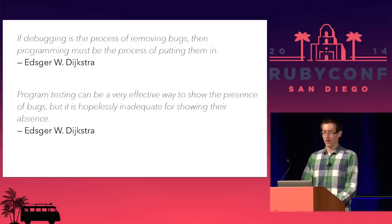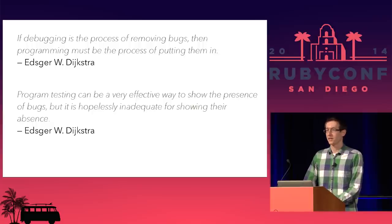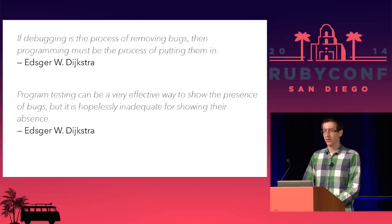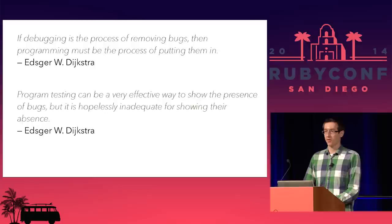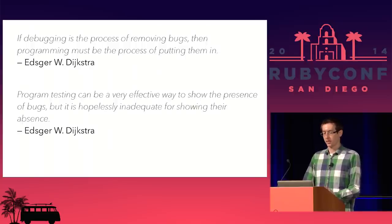'Program testing can be a very effective way to show the presence of bugs, but it is hopelessly inadequate for showing their absence.' Testing is great, but if you don't write the test, you don't catch the bug. Sometimes you don't know which tests you're missing — you don't know what you don't know. You should write tests for all the things you do know, but components can interact in ways you don't expect, or you can receive input you never even thought about. There's no way to be totally comprehensive — there are always going to be bugs slipping in the corners.